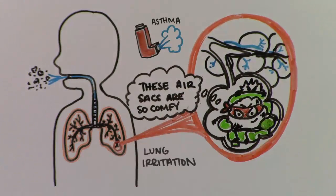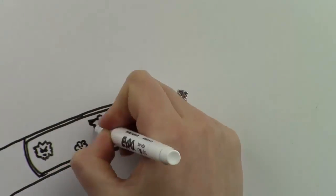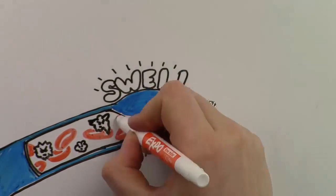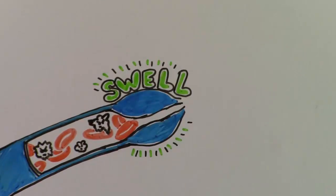They can cause problems like asthma and lung irritation. Some of Smidge's friends, the troublemakers, dissolve and get into your bloodstream. This causes tiny blood vessels to swell, suffocating parts of your body.